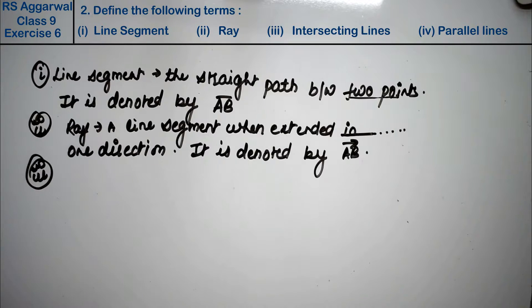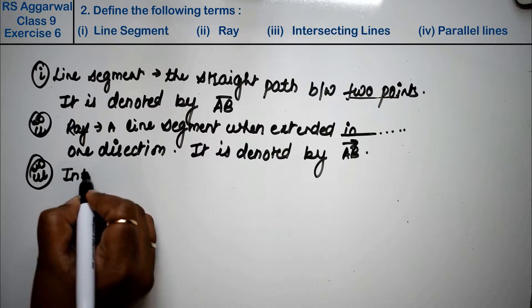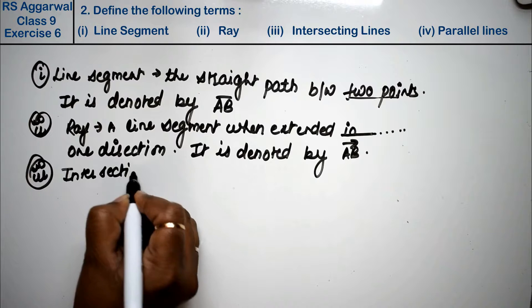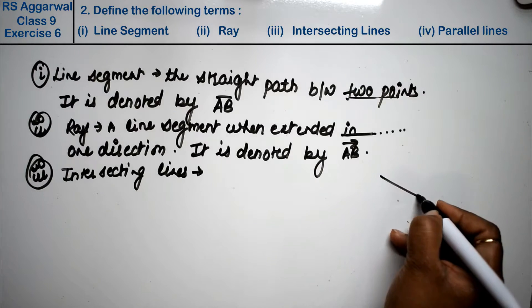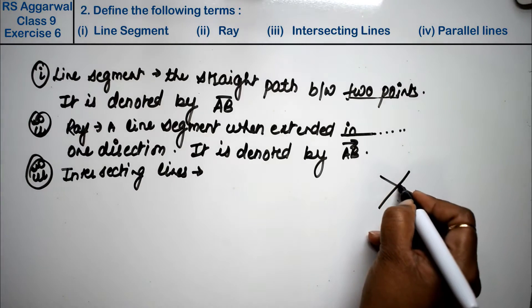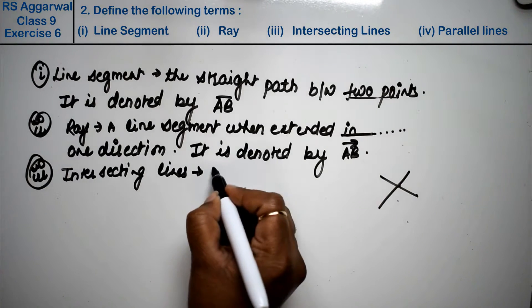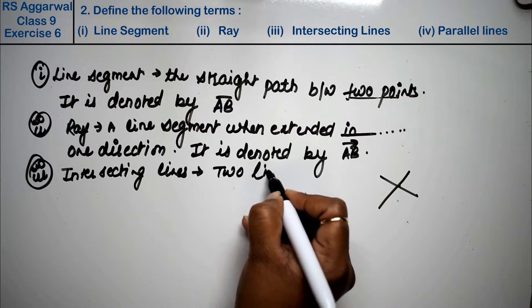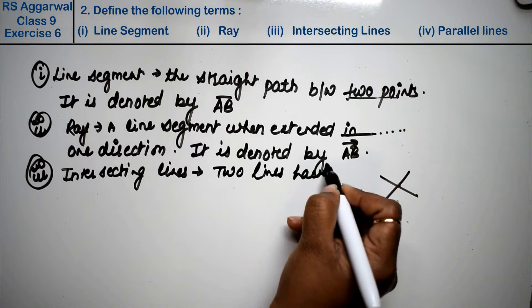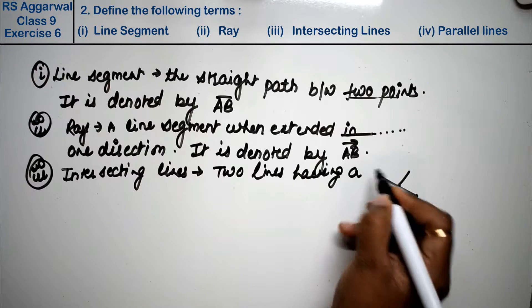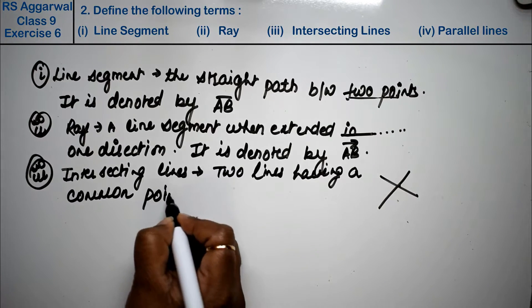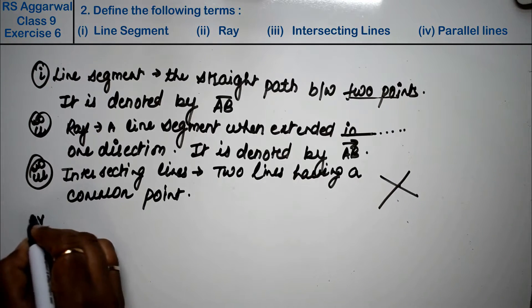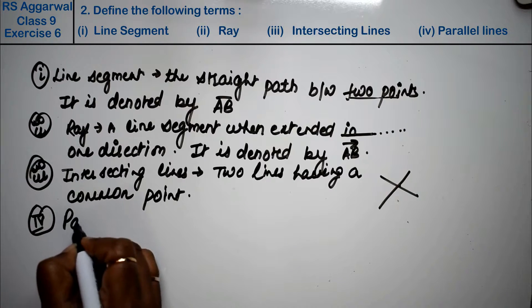Let's do third part. Third part is intersecting lines. Now intersecting - what are the two lines which intersect in the opposite direction? Common point is called intersecting lines. Two lines having a common point is called intersecting lines.